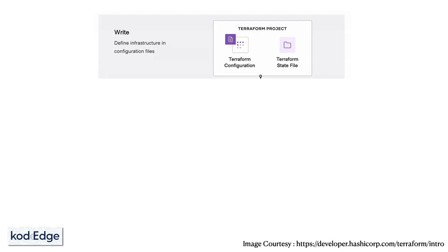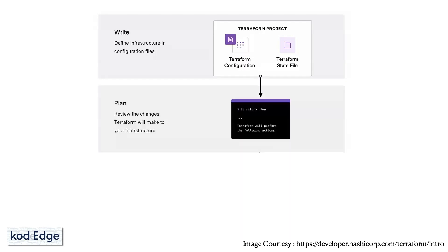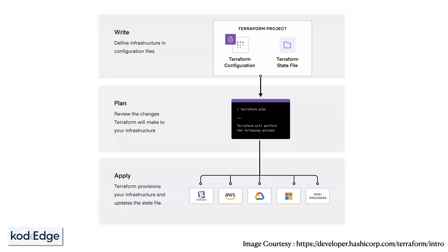Next is the plan phase. In the plan phase, Terraform creates an execution plan describing the infrastructure it will create, update, and destroy based on the existing infrastructure and your configuration. The last stage is apply — on approval, Terraform performs the proposed operations in the correct order, respecting any resource dependencies. For example, if you update the properties of a VPC and change the number of EC2 instances in that VPC, Terraform will recreate the VPC before scaling the instances.